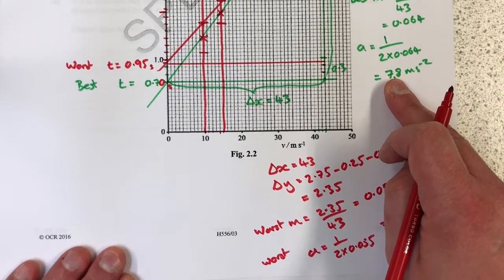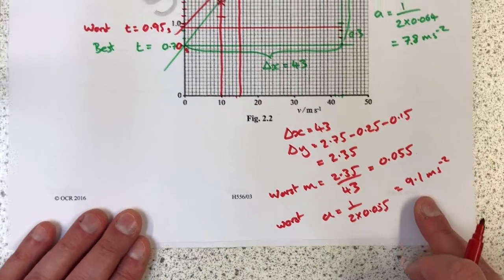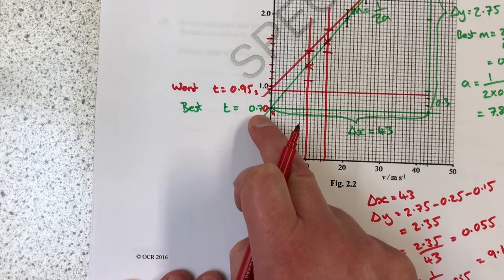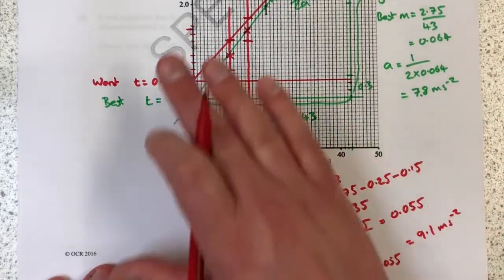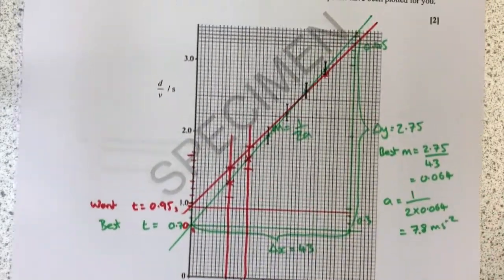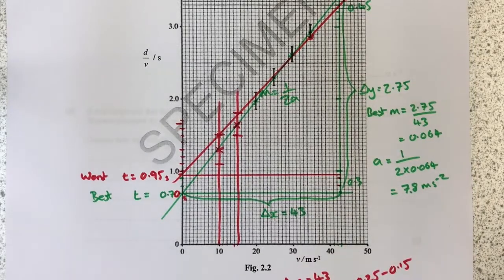So I've got everything, all the numbers that I've determined here: my best value for the acceleration, my worst value for the acceleration, my best value for the y-intercept, my worst value for the y-intercept. All the calculations I've used are all on the page for anyone to see and analyze where it came from.